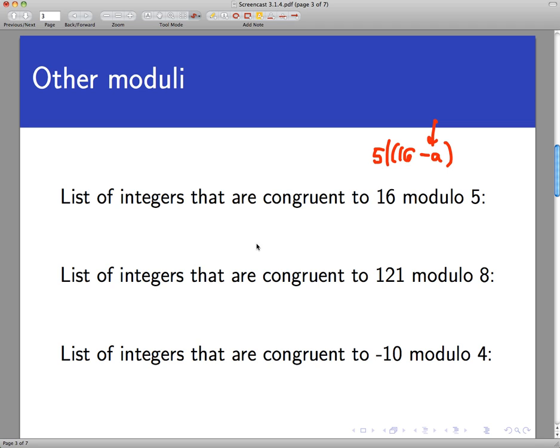Now one such number is definitely the number 16 itself. 16 is going to be congruent to itself mod 5 because 16 minus 16 is 0 and 5 divides 0. So it's actually easy to come up with one answer to this. It's just the number itself.